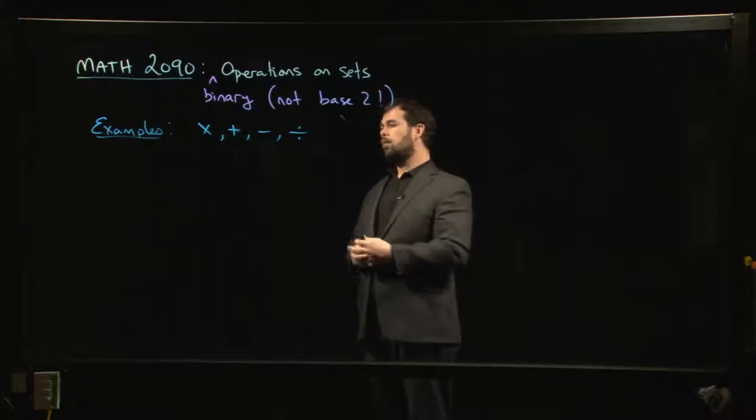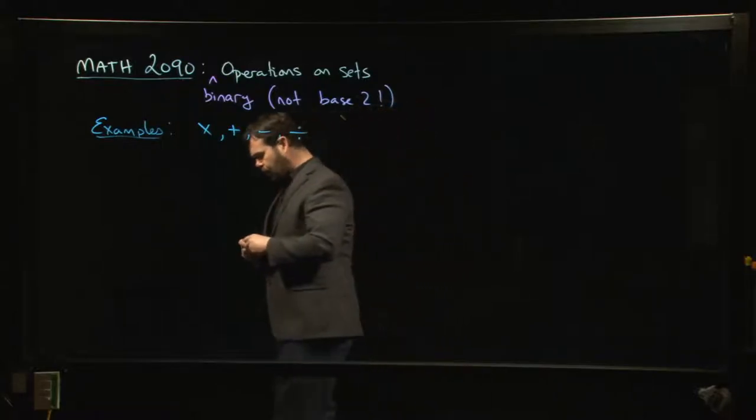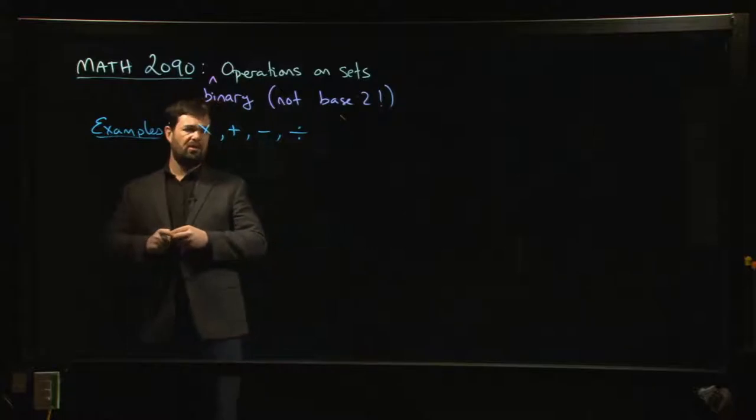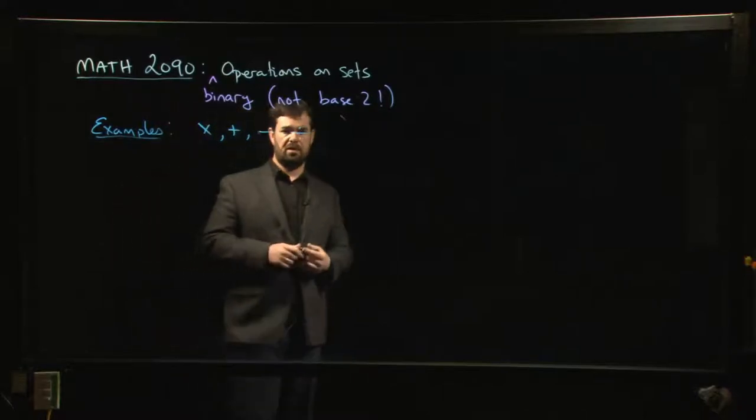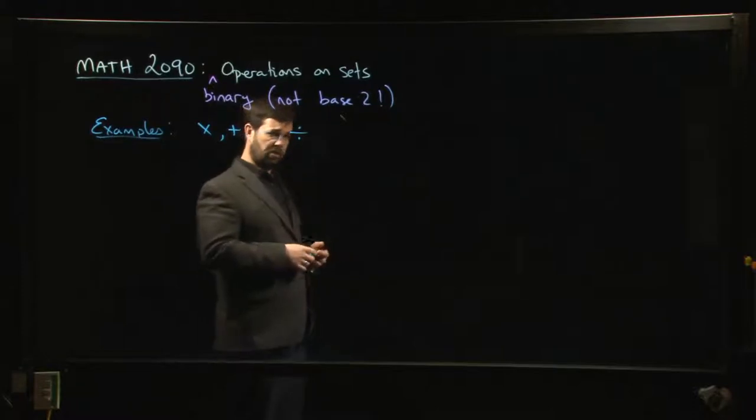This closure property is usually pretty important, and you'll sometimes also have to pay attention to issues like whether any two inputs can be used to get an output, or maybe the operation is not defined for every pair of inputs that you might choose, right?